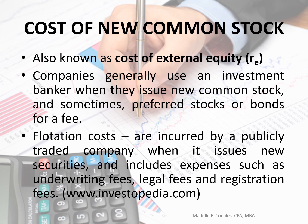We have the cost of new common stock, or what we call the cost of external equity. It is external equity because you need to issue it — it does not yet exist in the company. What we call internal equity is retained earnings. Companies generally use an investment banker in issuing new common stocks, preferred stocks, or bonds, but this is at a fee. We have what we call flotation costs — costs incurred when issuing new securities, including underwriting fees, legal fees, and registration fees.